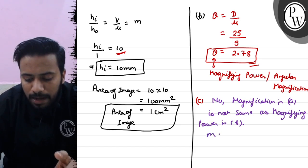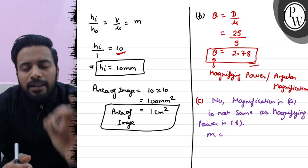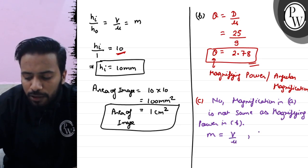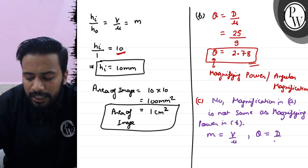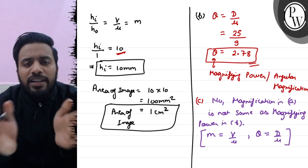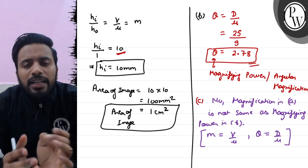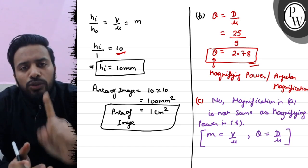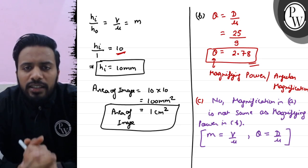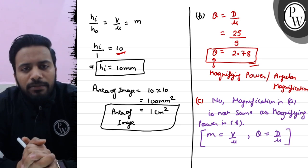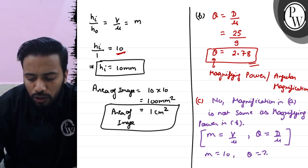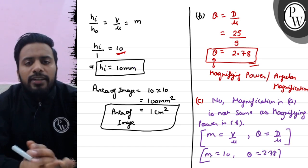This is because magnification M is measured as image distance divided by object distance, i.e., M = v/u, whereas angular magnification θ = D/u. These two are different. They would only be equal when the final image is formed at D — that is, at the least distance of distinct vision of 25 cm. Only in that case would magnification and magnifying power be the same. In this question, M = 10 and θ = 2.78, so they are not equal.